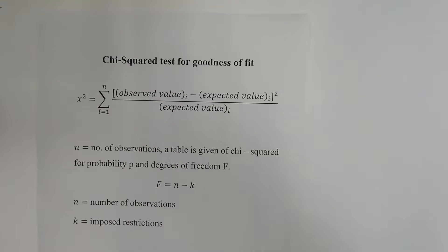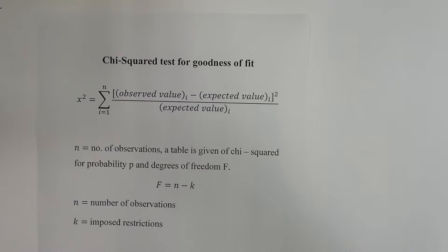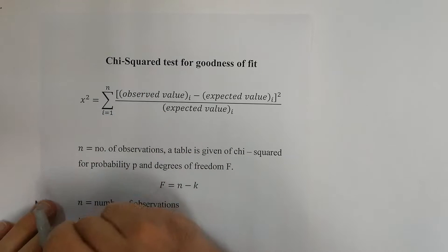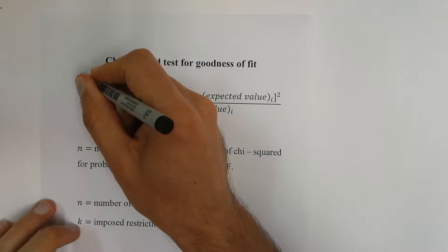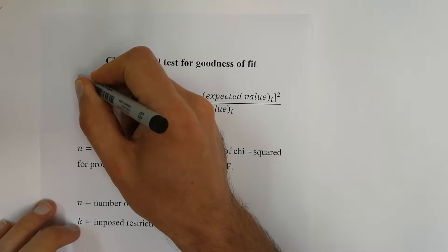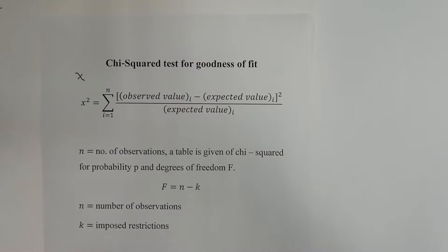Another statistical analysis technique that would be useful when you do recordings is the Chi-square test for goodness of fit. This is the Greek letter Chi, which you might have seen before. It almost looks like an X, so that's what you would probably see it written as.